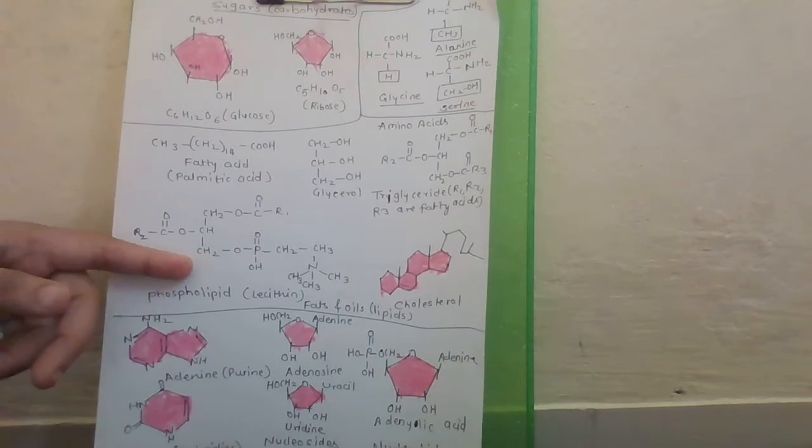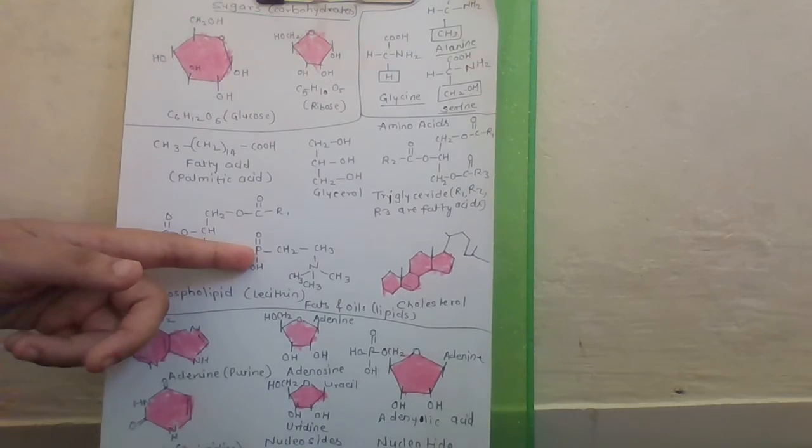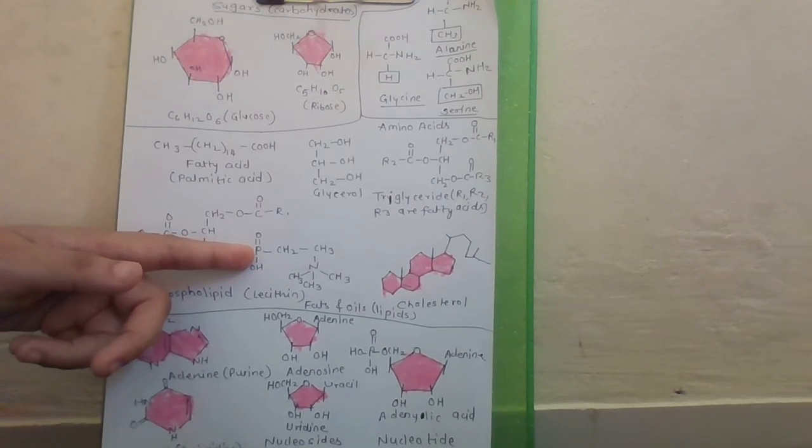See here. Here it is lecithin. This is phospholipid because of the presence of P. P means phosphorous.